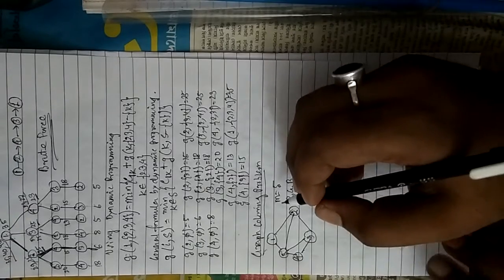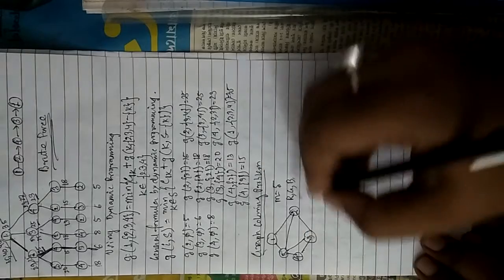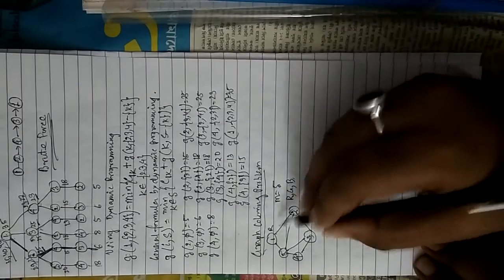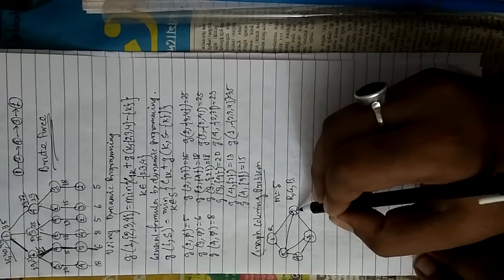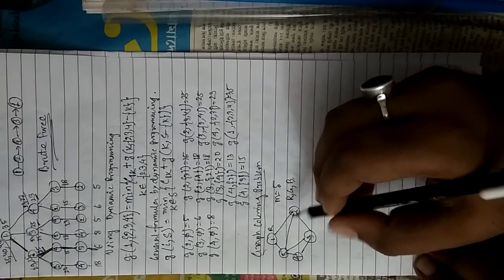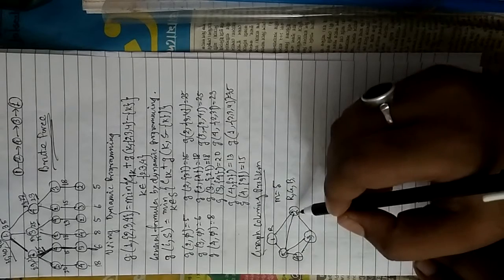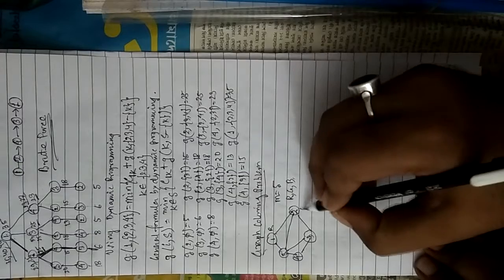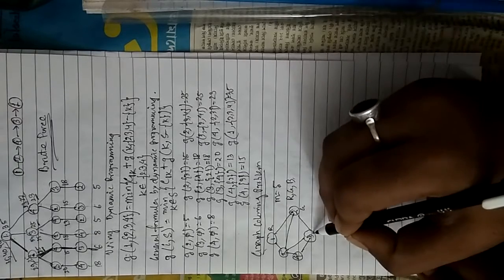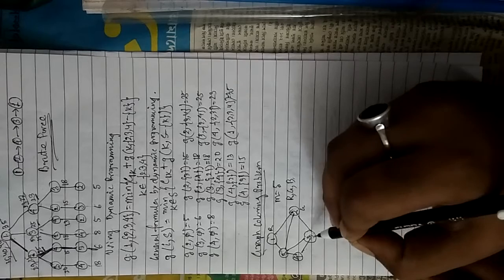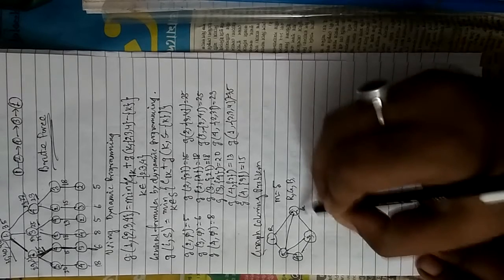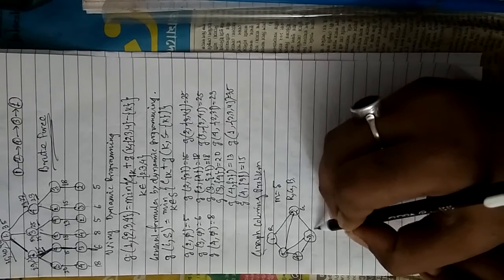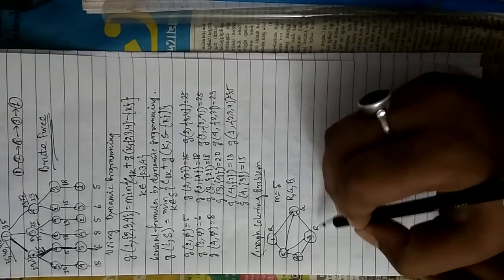Take any color — let's say red for node 1. Node 2 cannot be red because adjacent nodes must differ in color, so it may be green or blue. Let's say it is green. Now consider node 3: since it is adjacent to node 2, which is green, we can take red for node 3.